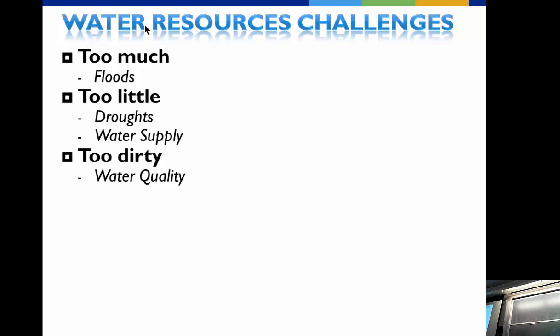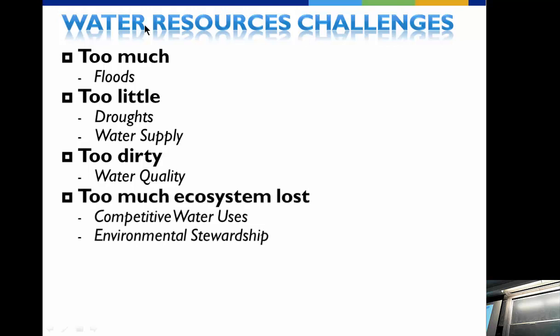The typical problems in water management are: too much water — related to floods; too little water — related to drought and water supply; too dirty — related to water quality; and too much ecosystem impact. Those four problems are basically what water resources management has historically addressed, and what we're working on right now.